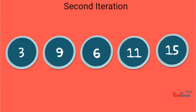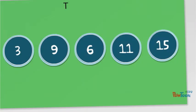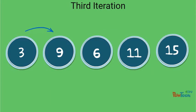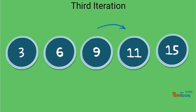Once again, we made swaps during the previous iteration, so we need to loop through again and examine it for additional swaps. On the third iteration, 3 is less than 9, so we move to the next element. 9 is greater than 6, so we swap them. 9 is less than 11, so we move to the next element. 11 is less than 15, so we move to the next element, which is also the end of the list.